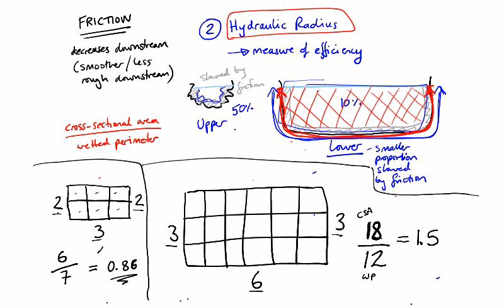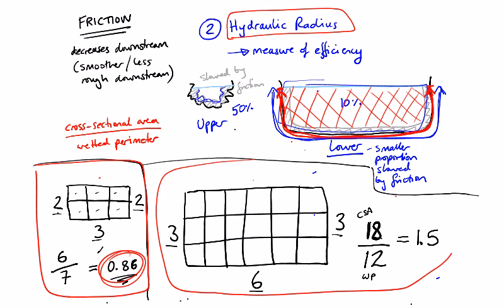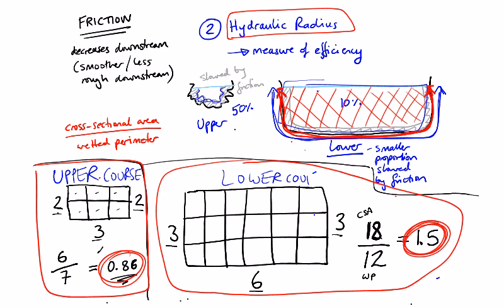So you can see that the smaller channel in the upper course has a smaller hydraulic radius, whereas the big channel in the lower course has a bigger hydraulic radius. So don't forget that this is the upper course near the source, and here's the lower course of the river near the mouth.